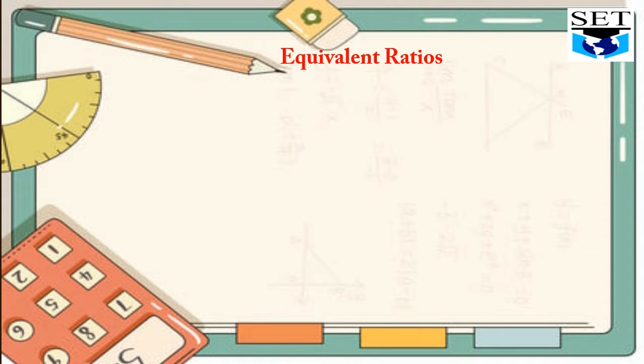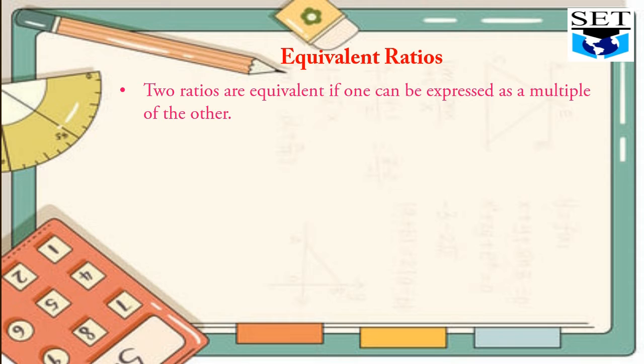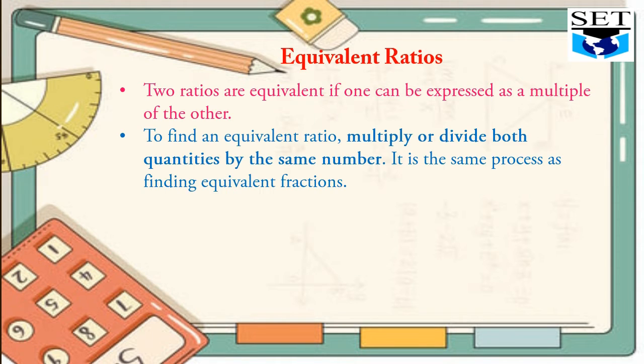Equivalent ratios. Two ratios are equivalent if one can be expressed as a multiple of the other. To find an equivalent ratio, multiply or divide both quantities by the same number. It is the same process as finding equivalent fractions.